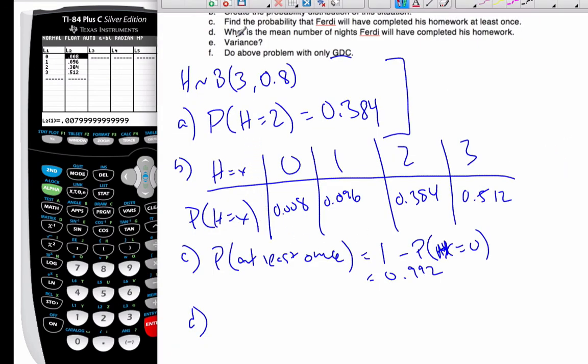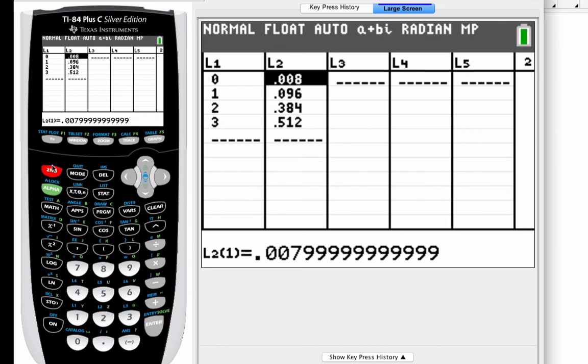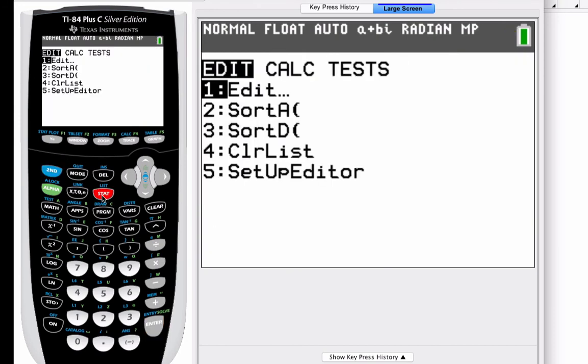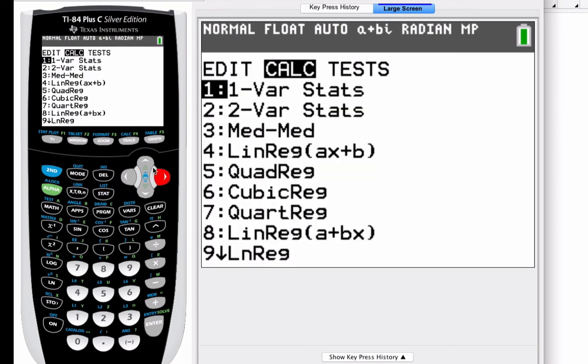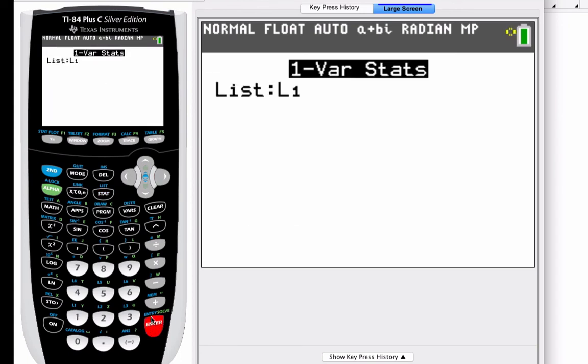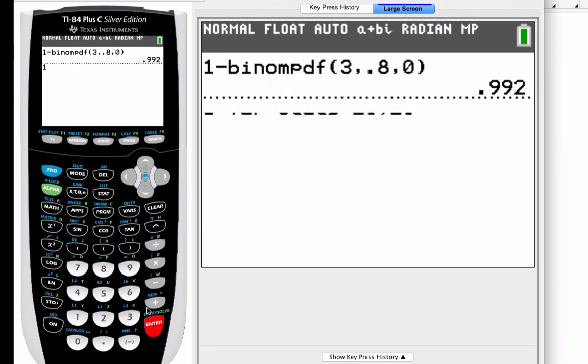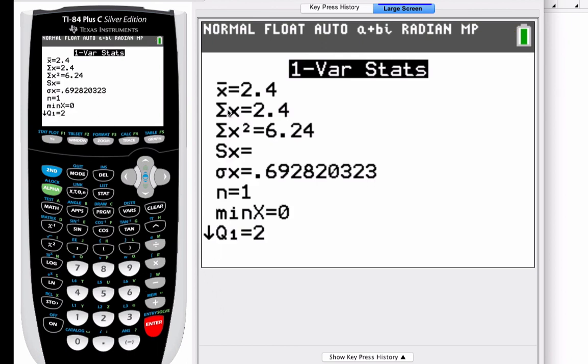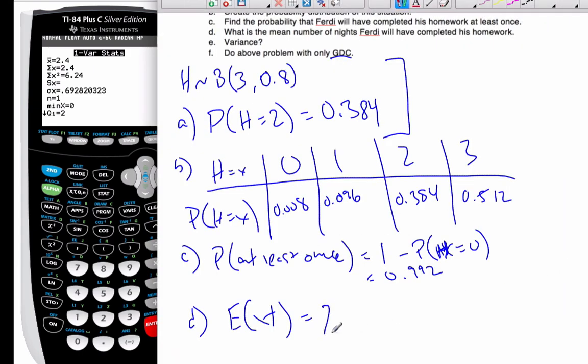Now, once I have that, I'm looking for the mean or the expected value of H. Once I have those, if I go to my stat, I want to calculate one variable statistics. L1 on my list, the frequency is L2. Click on that. And there's my mean. My mean is 2.4. My standard deviation is 0.6928.